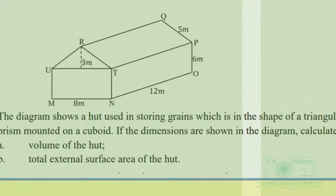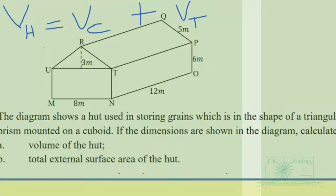To find the volume of the heart, we must calculate the volume of the cuboid and add it to the volume of the triangular prism. The volume of the cuboid is length times width times height. The volume of a triangular prism is the base area — which is half base times height — multiplied by the height of the triangular prism.